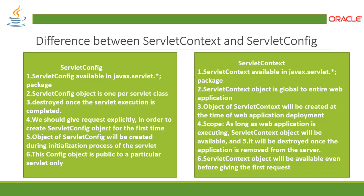Let's compare ServletConfig and ServletContext. ServletConfig is available in the javax.servlet API package. This object is one per servlet class and is destroyed once the servlet execution is completed — that's the stateless doGet method. You should make requests explicitly to create the ServletConfig object. A ServletConfig object is created during the initialization process and is accessible only to that particular servlet. ServletContext, on the other hand, is global to the entire web application. It is created at the time of web application deployment and remains available as long as the application is running.